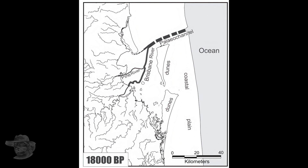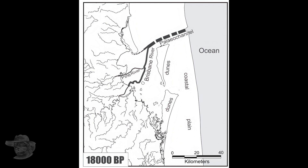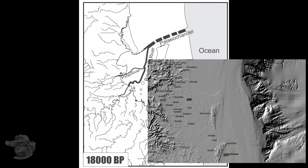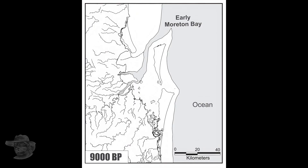Here is Moreton Bay about 12,000 years ago — the coast was way offshore, and the Brisbane River cut a channel right out to nearly the edge of the continental shelf. We can see some evidence of that in the continental shelf itself. Here we are 9,000 years ago: the sea level has risen a little, the coast has come in, the Brisbane River has formed a big inlet, still exiting up north of what is now Moreton Island and between it and Bribie Island. Sea levels are rising.